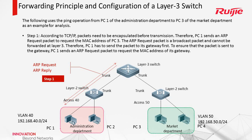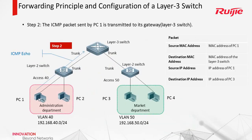Step 1: PC1 needs to ping PC4 in another department. Because the destination is in another subnet, PC1 will use the gateway's MAC address as the destination MAC address. So for encapsulating the packet, PC1 will send an ARP request first — but this ARP is requesting the gateway. We need to get out of this company first, so we go to the gateway. Then the layer 3 switch will reply. After PC1 learns the MAC address of this interface, it can finish the encapsulation and send the ICMP packet.